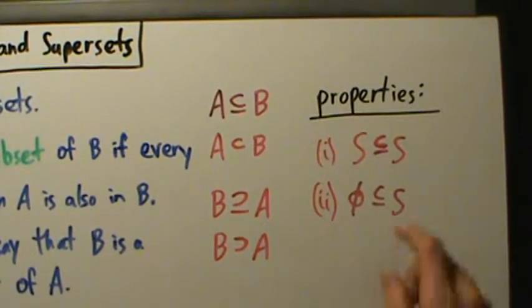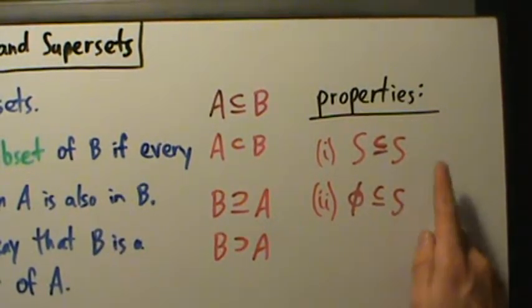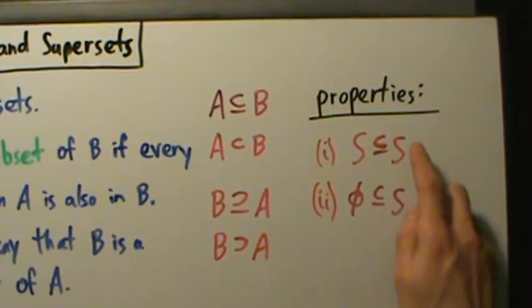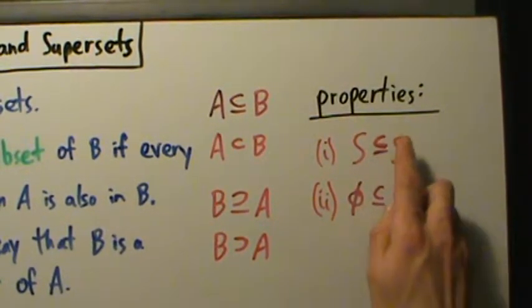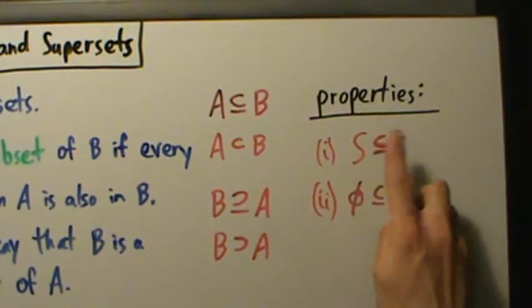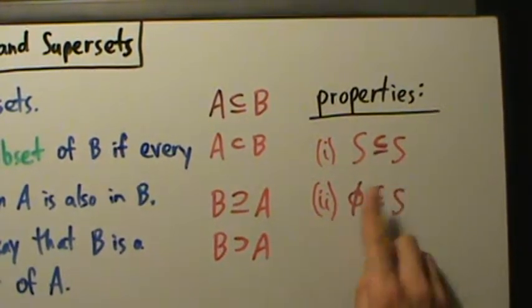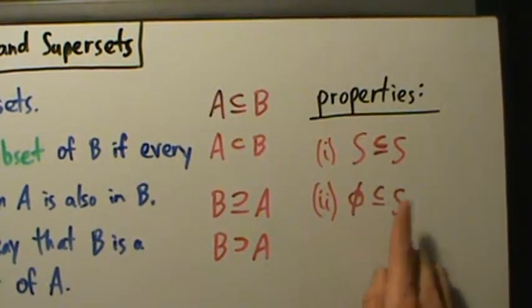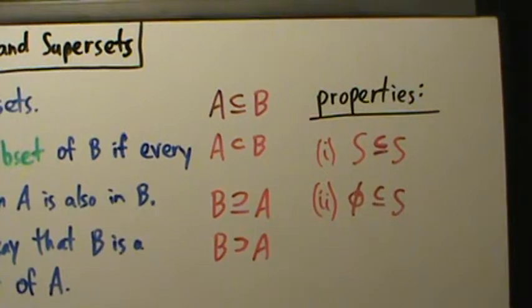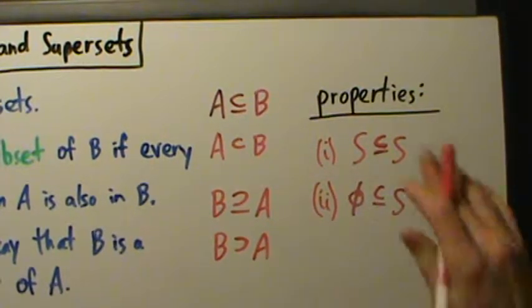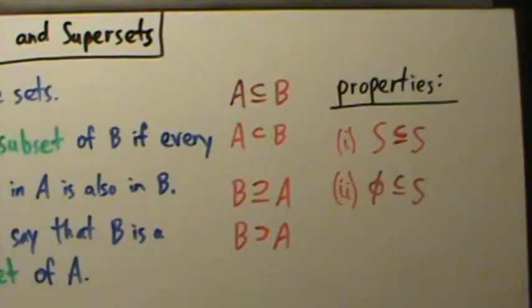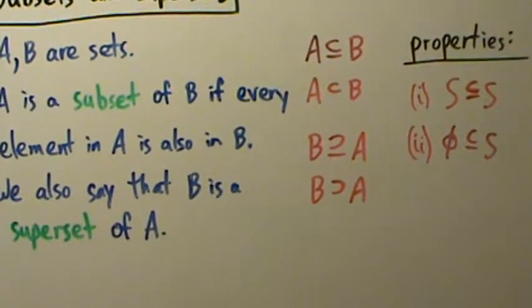So to summarize, two key properties: every set is a subset of itself, and the empty set is a subset of every set.